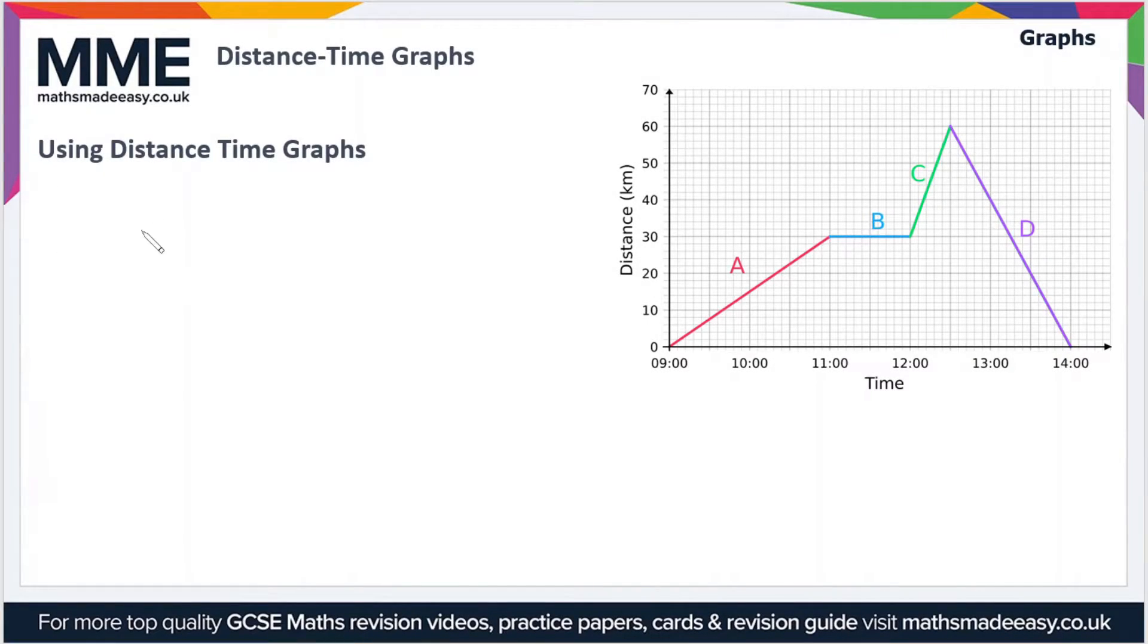If we move on, we might sometimes be faced with a question where we have to interpret or break down a distance-time graph. To do that, what you have to do is divide the graph into sections and explain what goes on in each section. Here we've got an example and we've broken the graph down into four sections: A, B, C, and D.